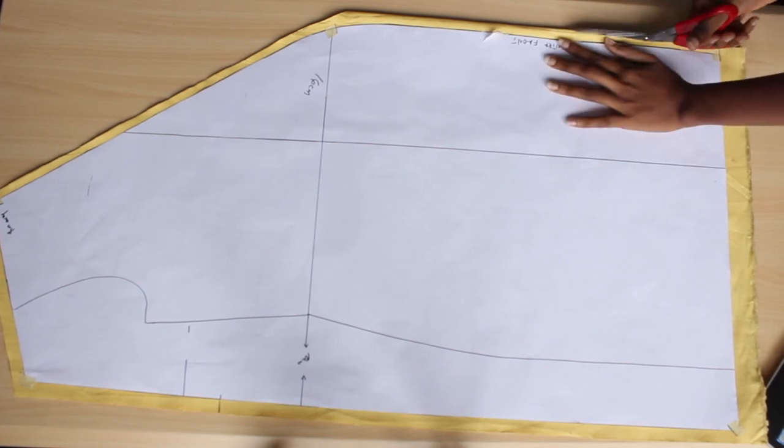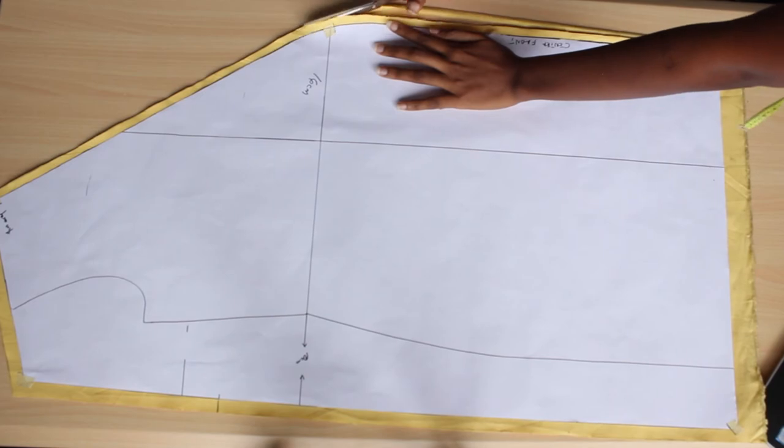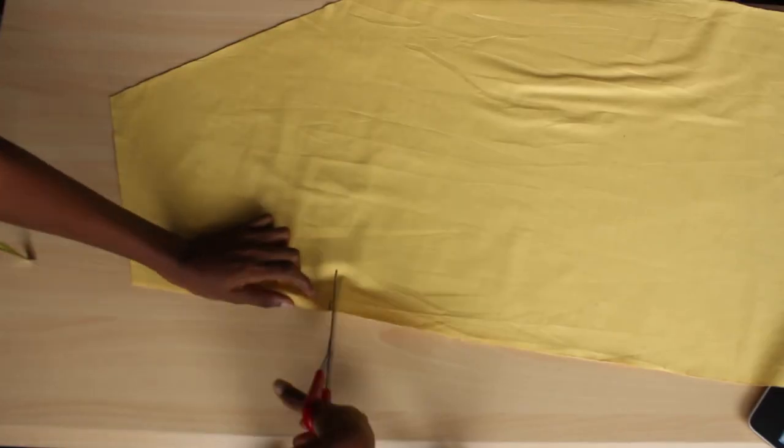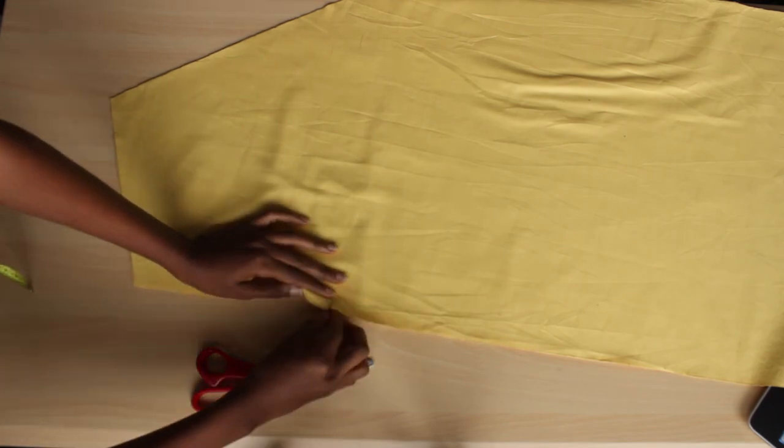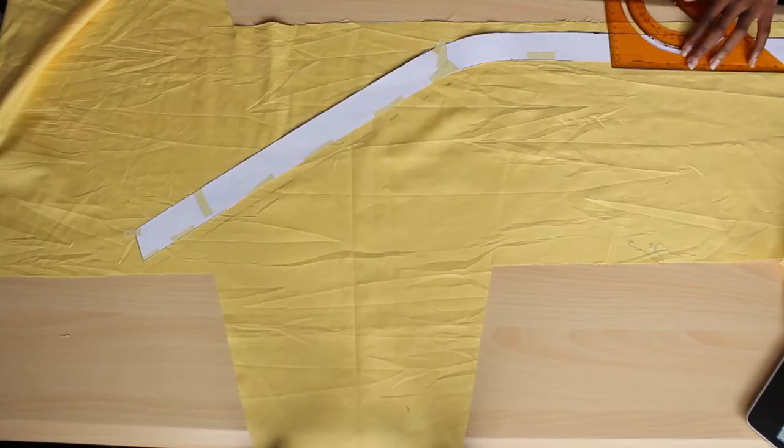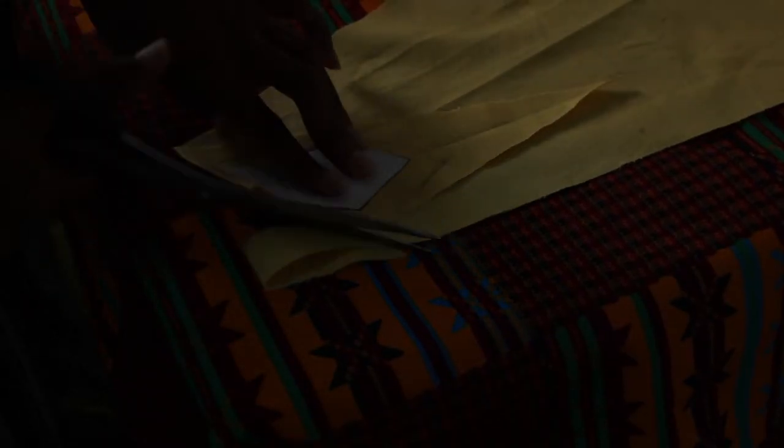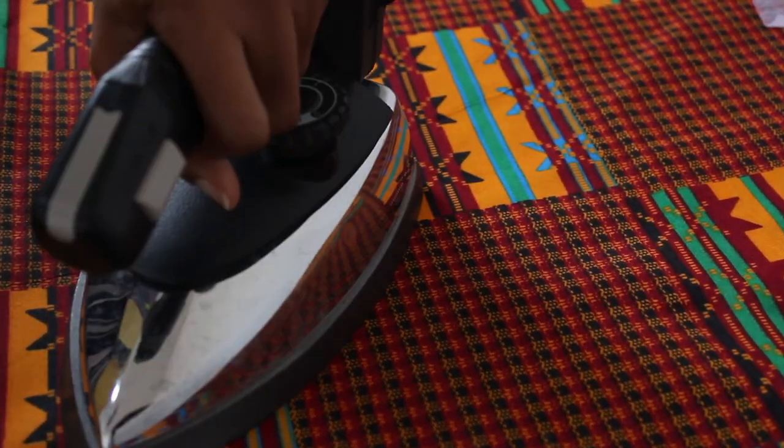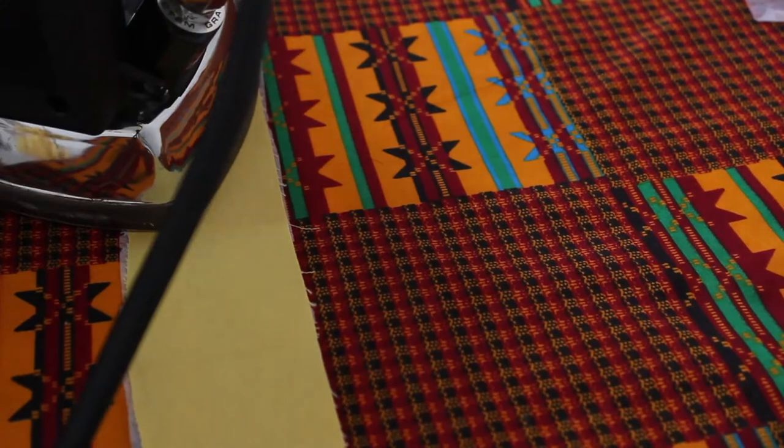This is my front fabric and I'm going to just notch where the sleeve is going to end so that there are no mistakes. Because I have a straight line here and I could easily have an issue identifying where it is. I'm doing the same thing with my extensions as well and just ironing fusible interfacing onto these extensions.